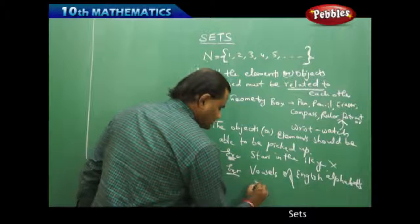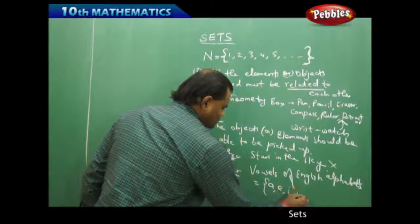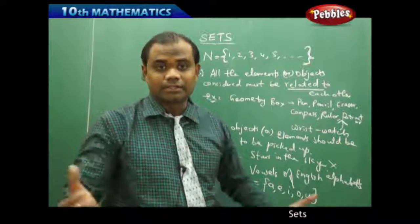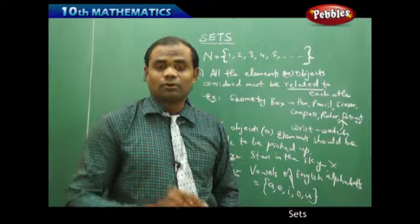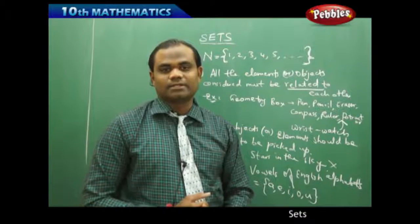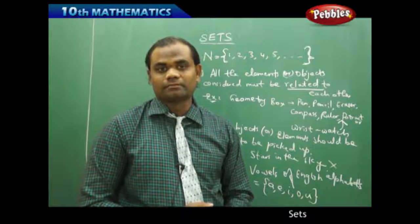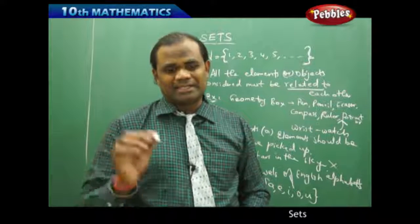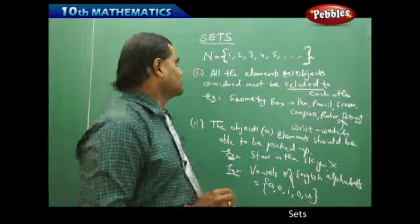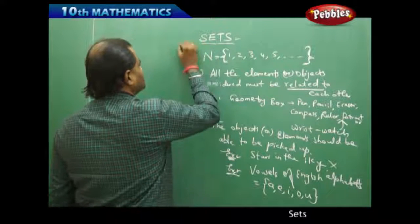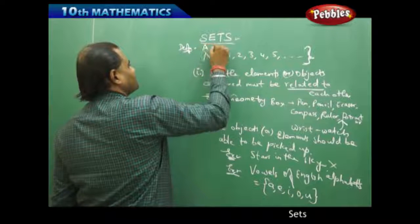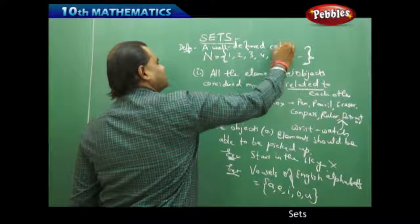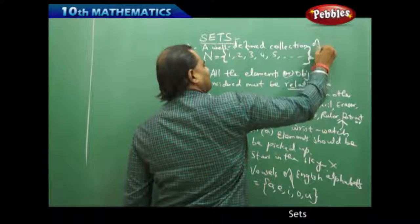The vowels of English alphabets, which are clearly A, E, I, O, U — something we already know from English class — form a set of vowels of English alphabets from the 26 letters starting from A to Z. So with this clear picture, a set is a well defined collection of objects. When I go with the definition it says: a well defined collection of objects.